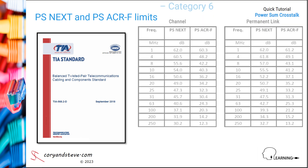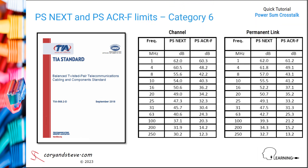Here are the limits for category 6, which is characterized to 250 megahertz versus 100 megahertz for Cat5E. The limits at a given frequency up to 100 megahertz are higher for Cat6 than for Cat5E, due to the better performance of the cables, connectors, and cords.